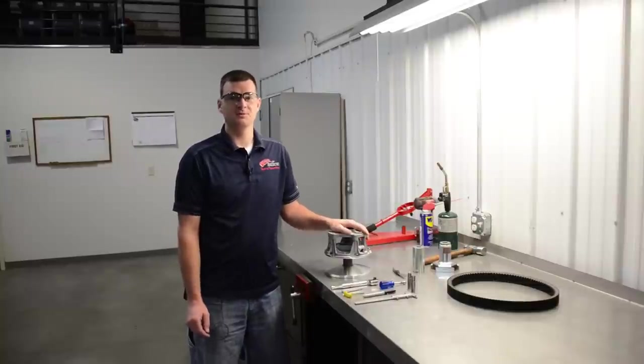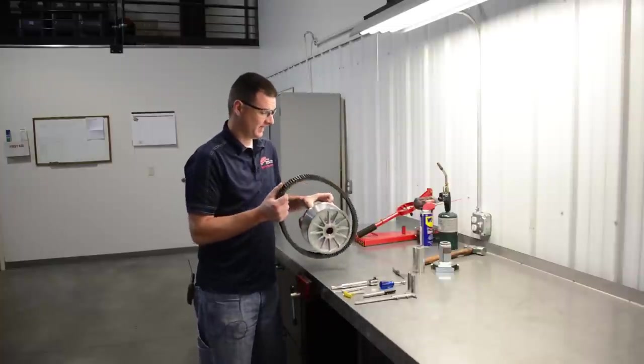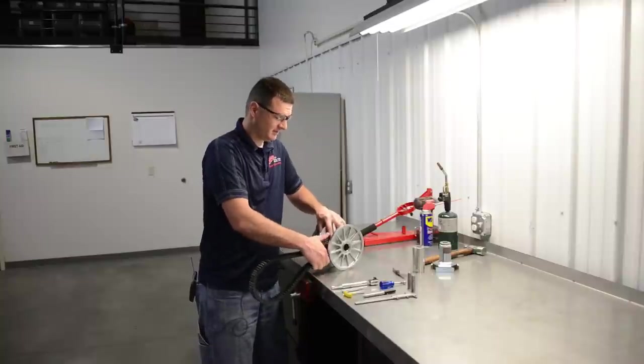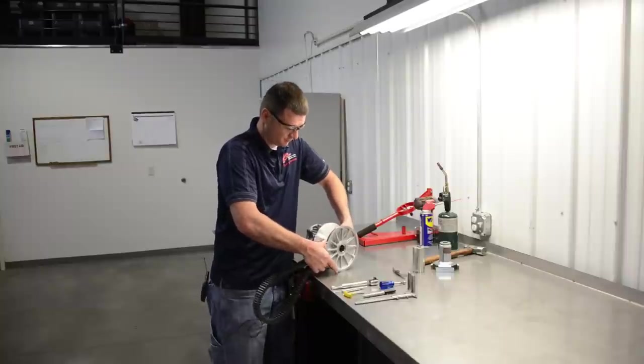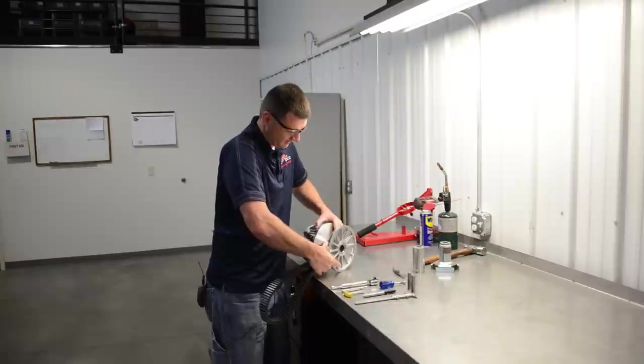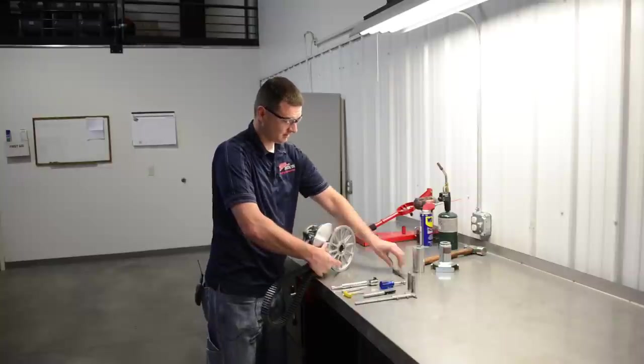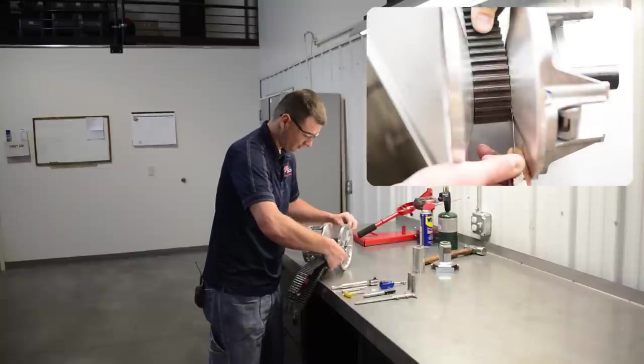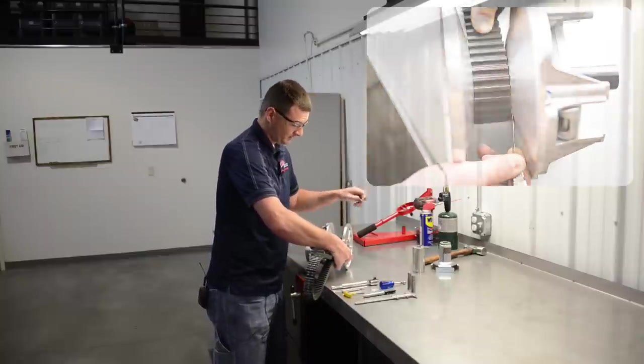The first thing we need to do is try to determine if our belt to sheave clearance is correct. And to do that, we'll take a measurement. We'll use a brand new belt that does need to be new as if you try to use a used belt it could be worn slightly and give you a false measurement. We'll place the belt in between the two sheaves and we'll pull it as tight as we can and then we'll slide it to one sheave so that all of the gap is on the opposite side. We'll take our feeler gauge, we'll stick our feeler gauge down in between the side of the belt and the sheave and measure how much gap we have.